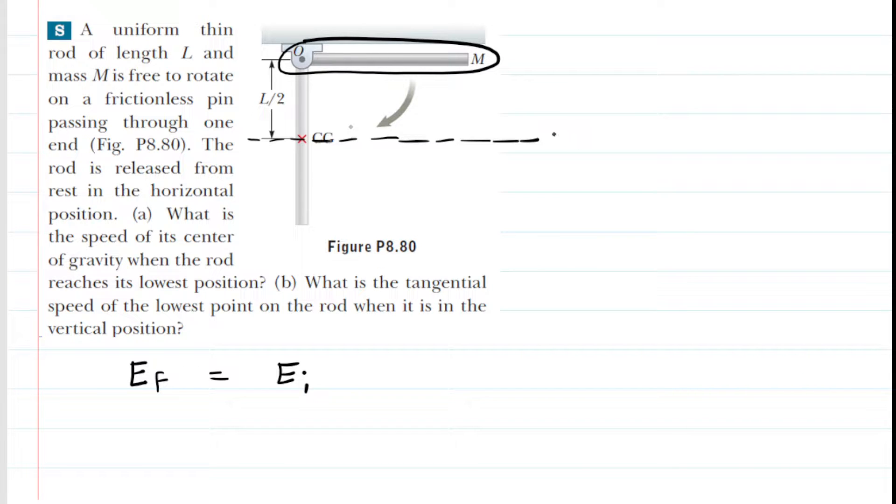That reference line is going to serve as our baseline height. In other words, that line represents a height of zero meters. So with that reference line, we can see that the rod would initially have some gravitational potential energy because its center of gravity is located